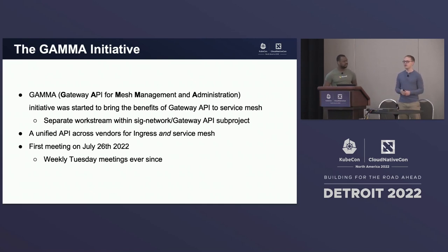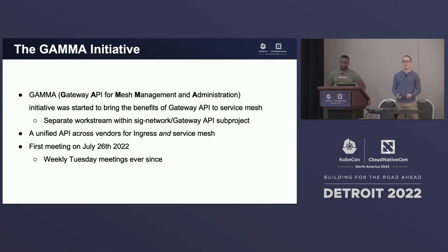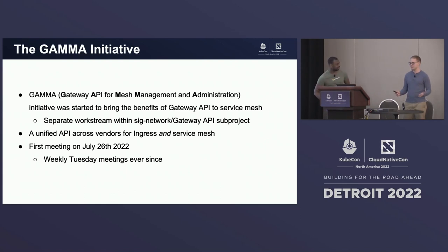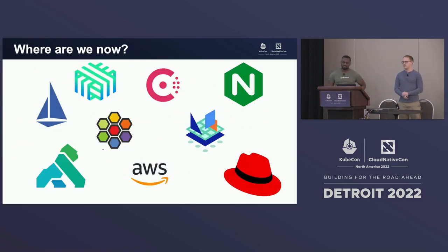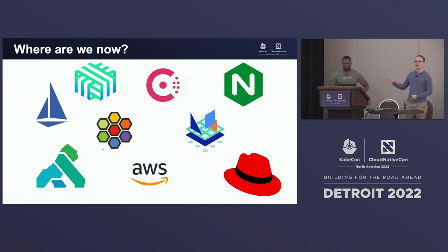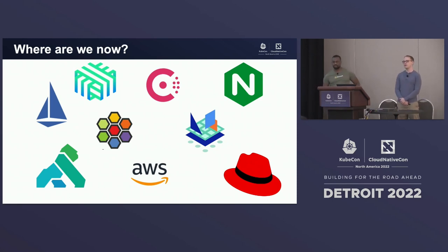Our goal is a unified API not just across mesh vendors, but also between ingress and mesh. If you want to do a canary rollout, you might want to apply that for both external traffic and internal traffic. Without a unified API between those two, you need to learn two different APIs to solve the exact same problem. Since July we've had weekly meetings, and we've gotten a huge number of different service meshes on board — and this is not a group of people you typically see all agreeing on one thing.